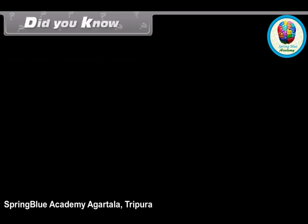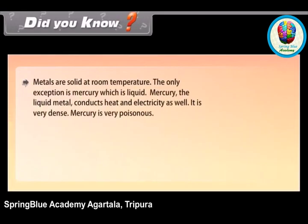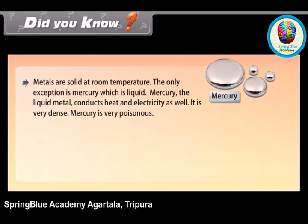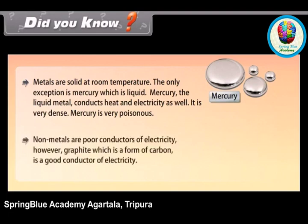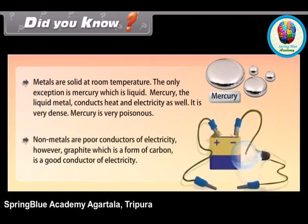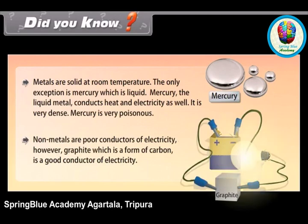Did you know? Metals are solid at room temperature, with the only exception being mercury, which is liquid. Mercury, the liquid metal, conducts heat and electricity as well and is very dense. However, mercury is very poisonous. Non-metals are poor conductors of electricity; however, graphite, which is a form of carbon, is a good conductor of electricity.